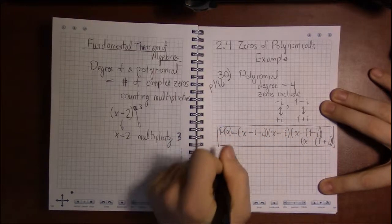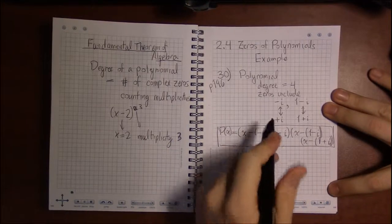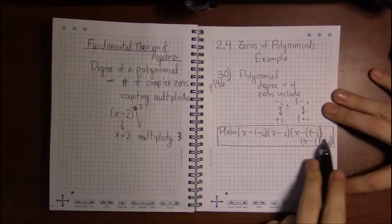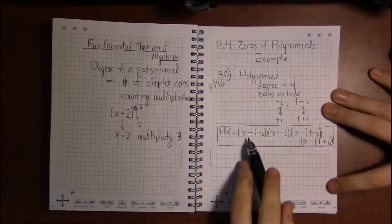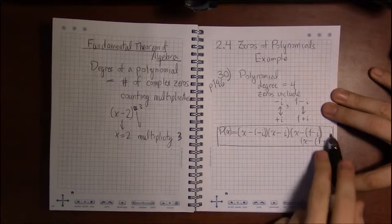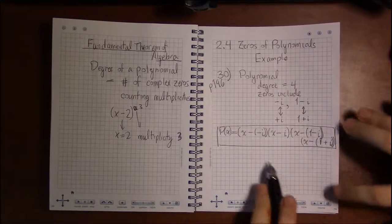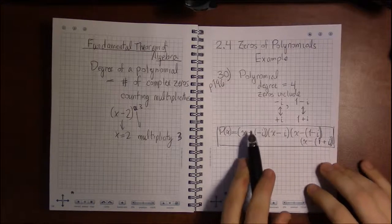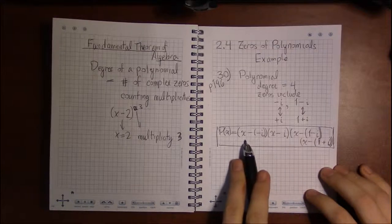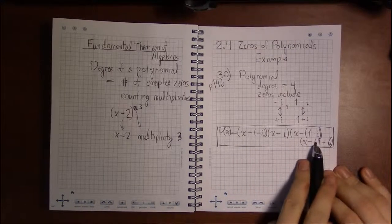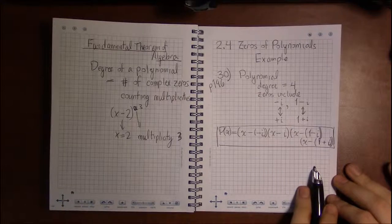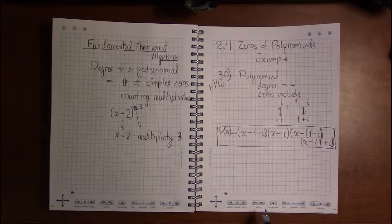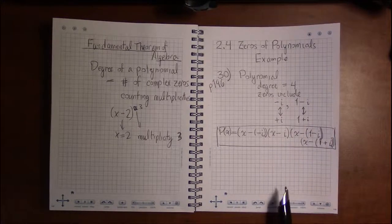You might say, wait a minute, I see i's here. The Conjugate Pair Theorem told us there are no i's in sight when everything's multiplied out in standard form, not completely factored like this. If you were to multiply all this out, you would end up getting a fourth-degree polynomial which had no i's in it whatsoever, so we are allowed to do this.